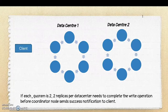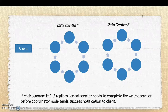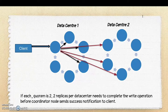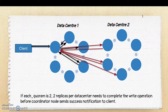There is one more consistency level called Each Quorum. Unlike Local Quorum, where the coordinator only waits for local replicas, with Each Quorum — if the value is 2 — 2 replicas per data center must complete the write operation before the coordinator sends success to the client. So the coordinator sends the write request to all nodes in data center 1 and data center 2 and waits for responses from both data centers before sending success back to the client. That is the difference between Local Quorum and Each Quorum.